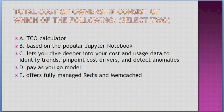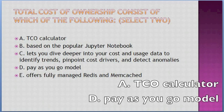Total cost of ownership consists of which of the following? Select two. Options: A. TCO calculator and pay-as-you-go model, B. Based on the popular Jupyter Notebook, C. Lets you dive deeper into your costs and uses data to identify trends and detect anomalies, D. Pay-as-you-go model, E. Offers fully managed Redis and Memcached. Answer: A — TCO calculator, and D — pay-as-you-go model.